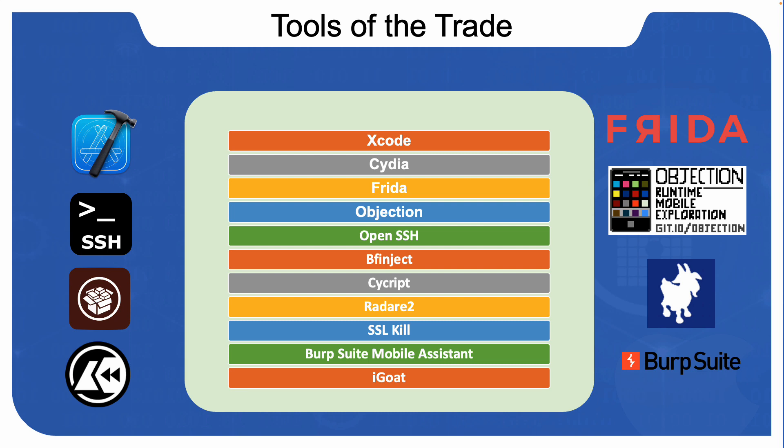Radare2 is an open source reverse engineering framework used for static and dynamic analysis. You can also use it for digital forensics, software exploitation, and more.